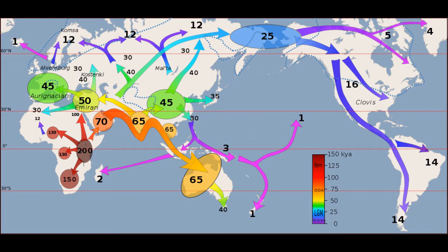I'll go into depth in the following videos about each of the major clades. As you can see, the Cro-Magnon develops in the Levant — it's got a date of 50,000 here — and enters Europe around 40,000 to 45,000 years ago.